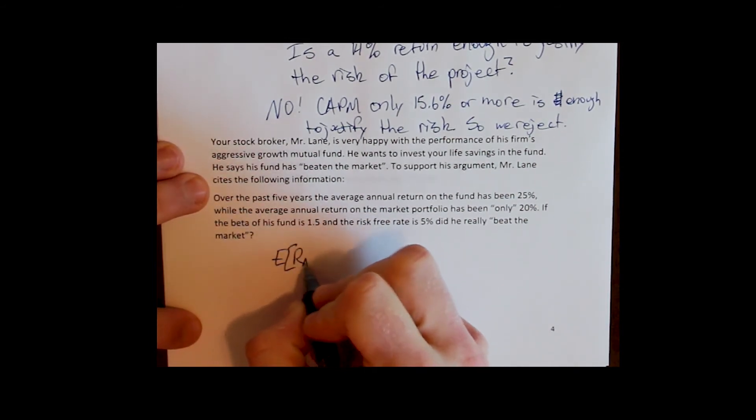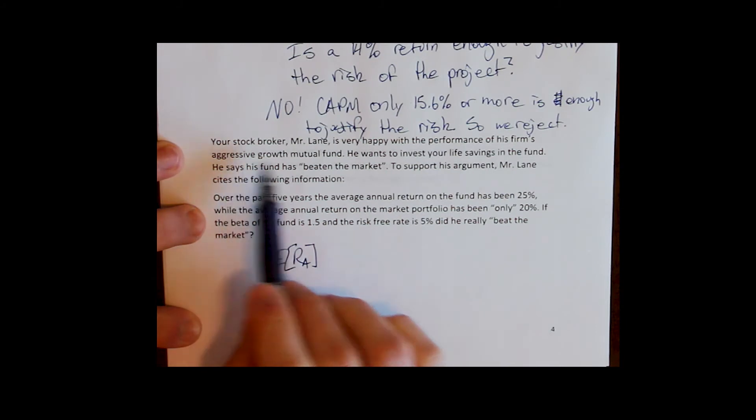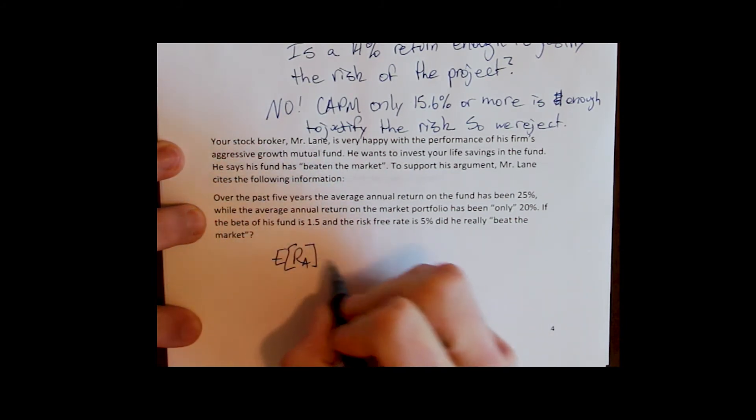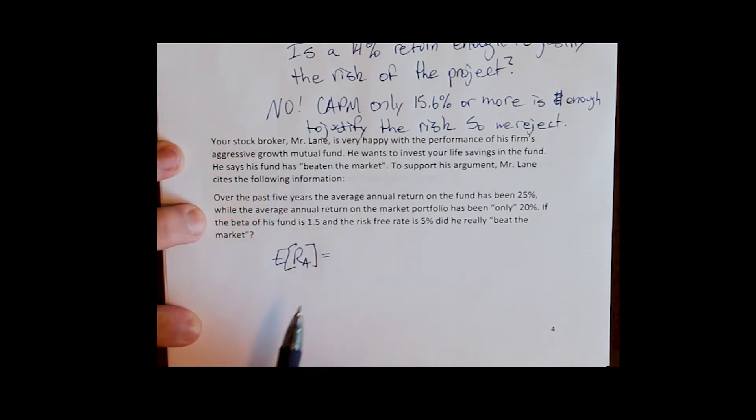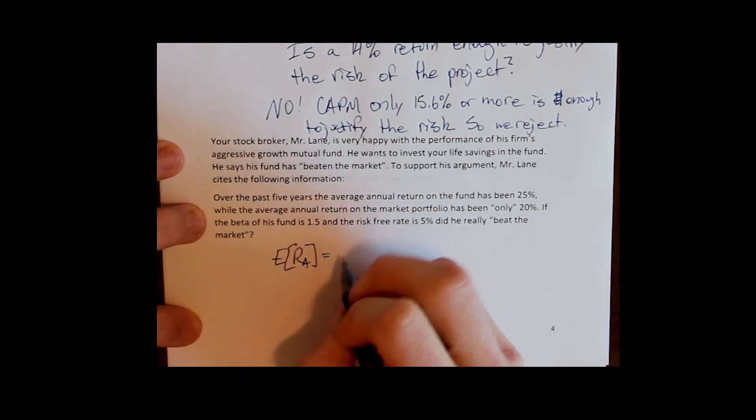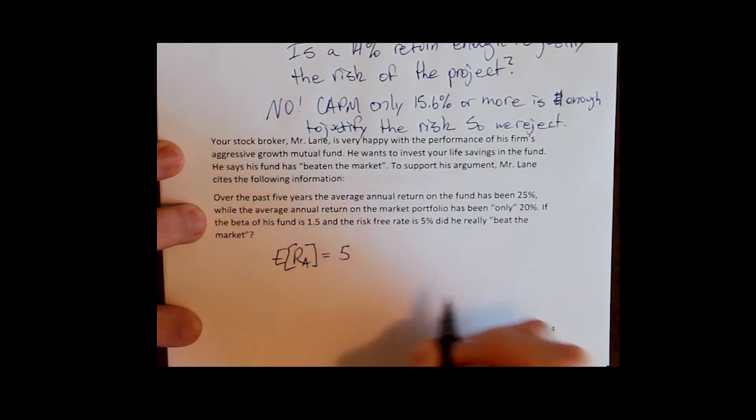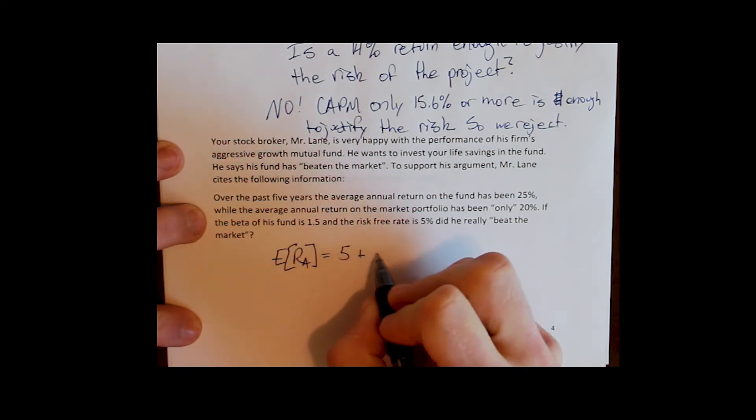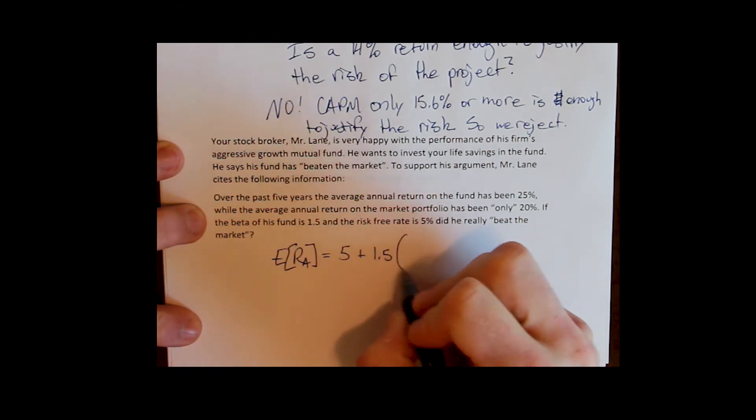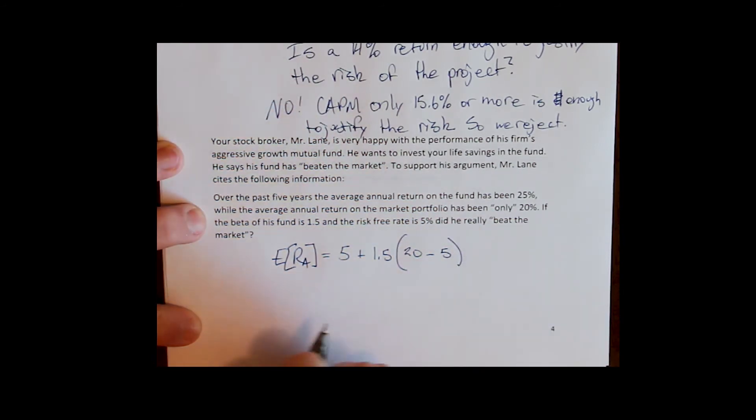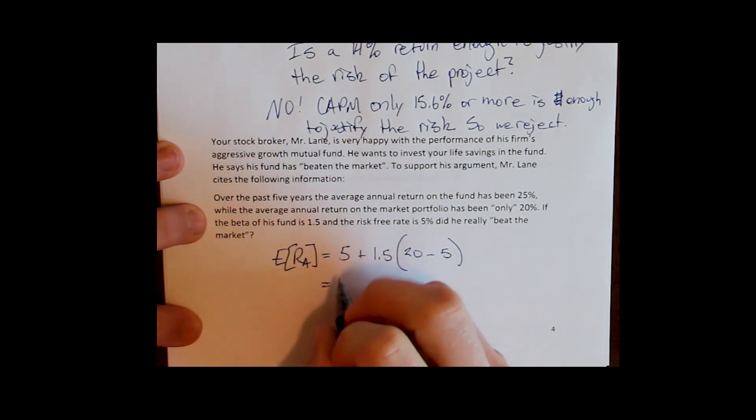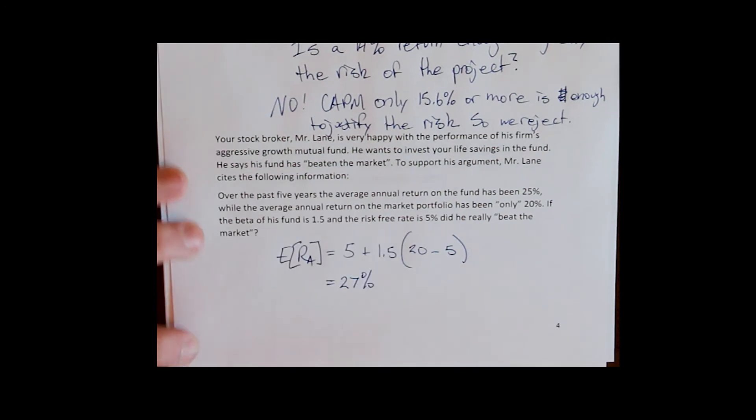CAPM says the expected return of any asset, including this aggressive growth mutual fund, which is just a portfolio of aggressively growing stocks, has to be equal to the risk-free rate, 5%, plus the beta of the portfolio times the market risk premium, which is the expected return on the market minus the risk-free rate. Do our addition here and get an expected return of 27%, right?